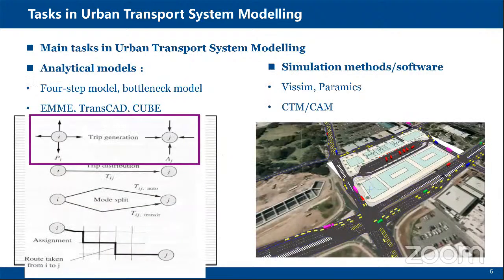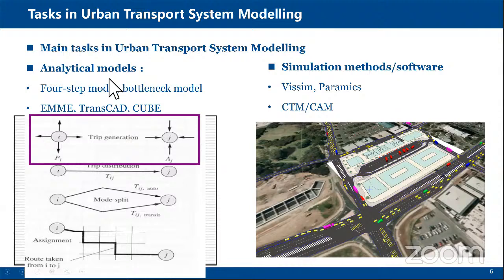In the history of transport engineering — a discipline of about 100 years — we have basically two different types of methods to measure traffic volume and network performance. The first type is analytical models; the second type is simulation methods. For analytical models, a very well-known method is the four-step model. This is important domain knowledge in transport engineering. The four-step model includes four different steps: trip generation, trip distribution, mode split, and traffic assignment.